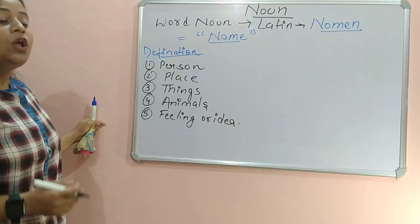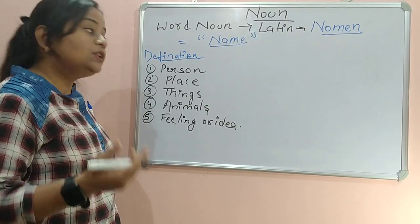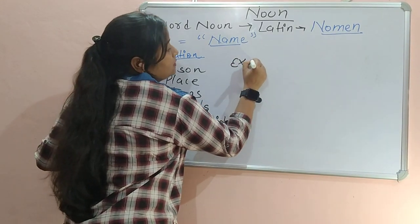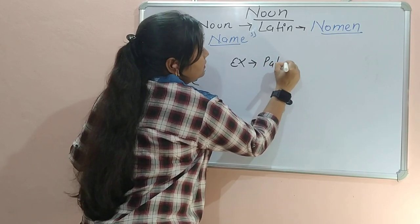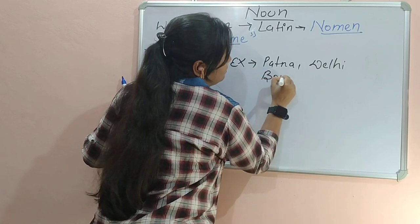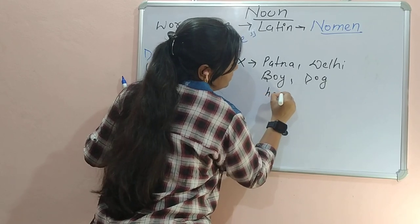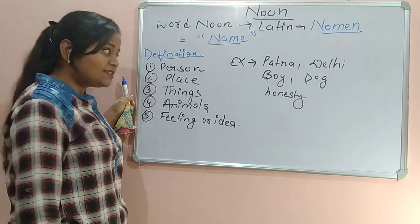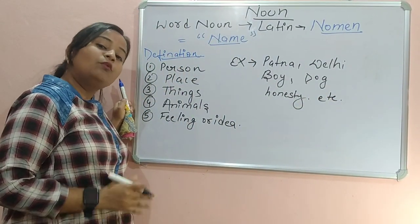Which means all the things which we can call by their name are called noun. For example, any place — Patna or Delhi — boy, dog, honesty — all are nouns. I hope you all understand what is noun. Let's come to its types.